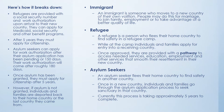Here's how it breaks down. Refugees are provided with a Social Security number and work authorization upon arrival to this country. They can apply for Medicaid, Social Security, and other benefit programs. After five years, they must apply for citizenship. They don't have to pass the test if they're not able to, but they must apply and keep trying. Asylum seekers can apply for work authorization after their asylum application has been pending for 150 days. The work authorization will come roughly 180 days after it's been submitted. Once asylum has been granted, they must apply for citizenship after five years. However, if asylum is not granted, individuals and families are deported back to their country or to the last country they came from.